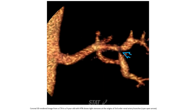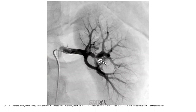Coronal CTA surface rendering of a CT in a 9-year-old with hypertension shows tight stenosis at the origin of a third-order renal arterial branch. DSA of the left renal artery in the same patient confirms the tight stenosis at the origin of the third-order renal artery branch, with mild post-stenotic dilatation.